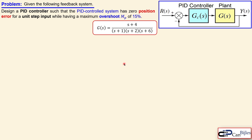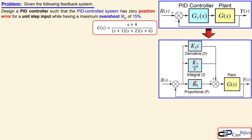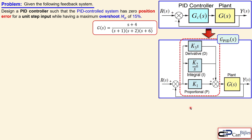The PID controller has three parts: the proportional, the integral, and the derivative part — that's why it's called PID. These three blocks have gains K1, K2, and K3, given here in the Laplace domain. Together, the summation of these three blocks makes the PID controller, specifically called GPID.